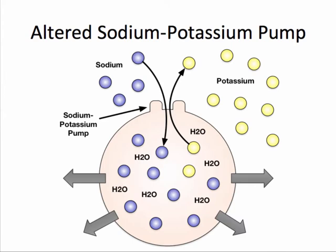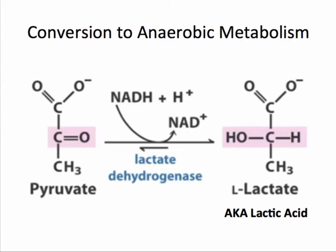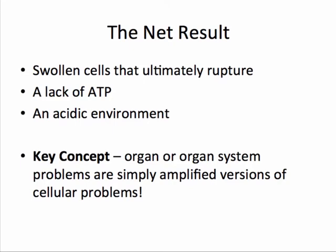Expand this concept and you can imagine the damage that a lack of oxygen can have on the body. Because pyruvate can no longer enter aerobic metabolism, it is converted to lactic acid. Lactic acid can sustain energy needs for a very short period of time. However, if oxygen is not restored, lactic acid accumulates and severe multi-system damage can ensue. The net result of a lack of oxygen is swollen cells that ultimately rupture, a lack of ATP, and an acidic environment. The key concept here is that organ or organ system problems are simply amplified versions of cellular problems.